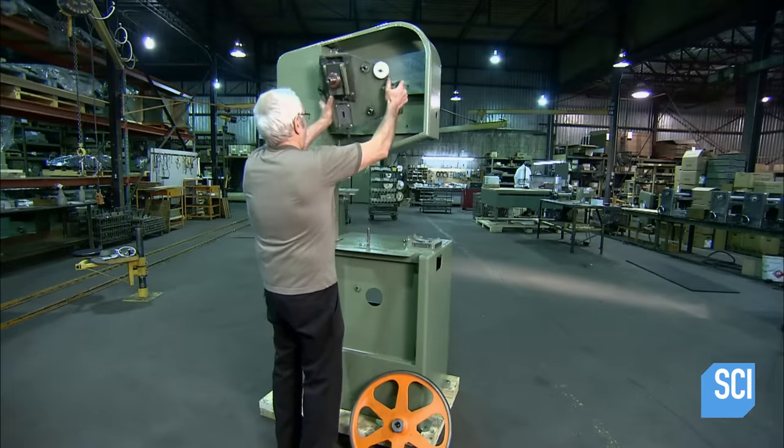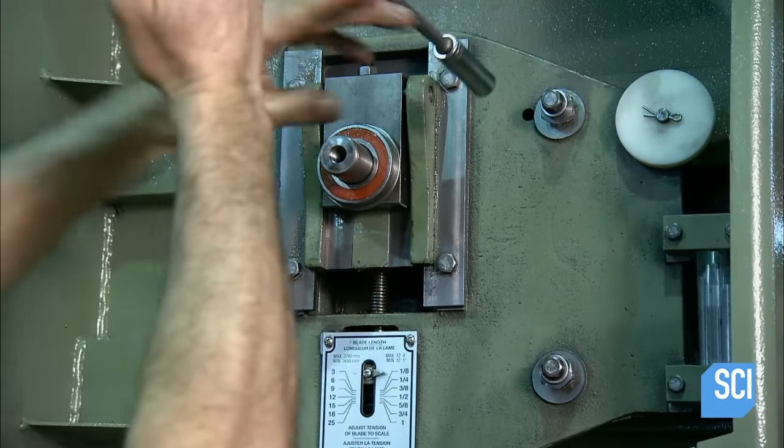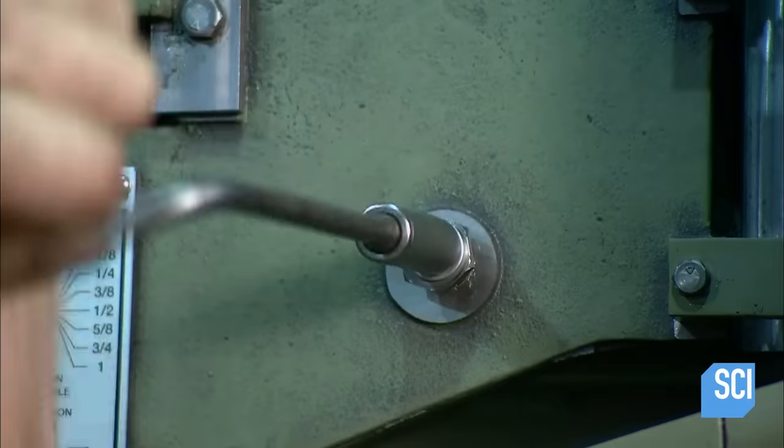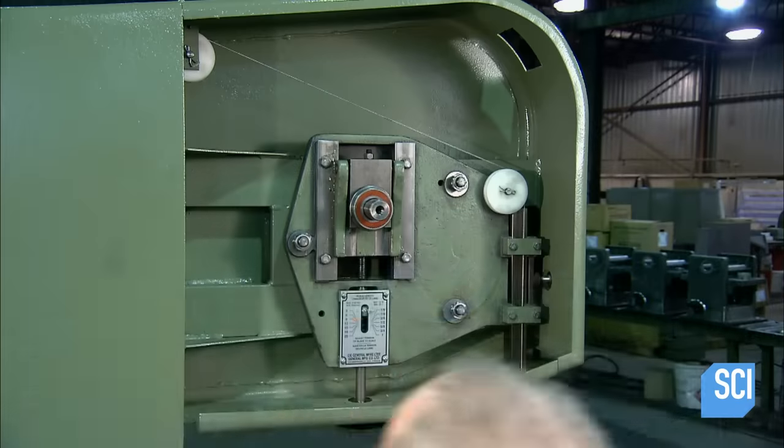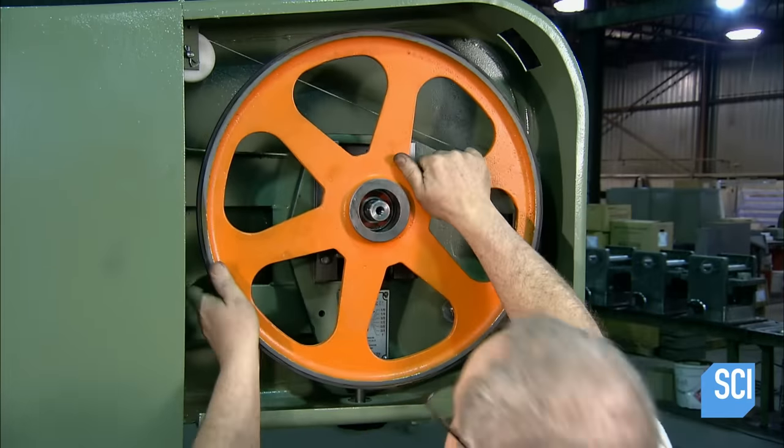In the meantime, another department has welded the band saw steel cabinet. After the cabinet gets a paint job, workers begin installing the various components. Among them, the support assembly for the upper wheel.